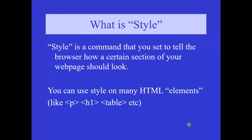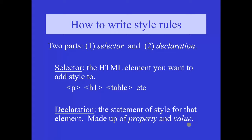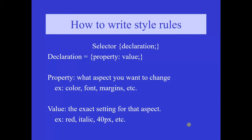CSS altogether is a styling language — a set of rules to tell browsers how your web page should look. What is style? Style is a command that you set to tell the browser how a certain section of your web page should look. You can use style on many HTML elements like paragraph, header, table, etc. How to write style rules? There are two parts: one is selector and another one is declaration. The selector is the HTML element you want to add style to — example: paragraph, header, table. The declaration is the statement of style for that element, made up of property and value, given within curly braces.